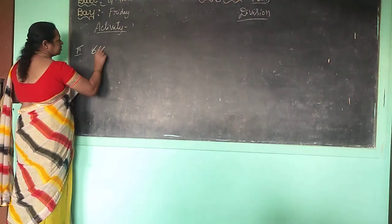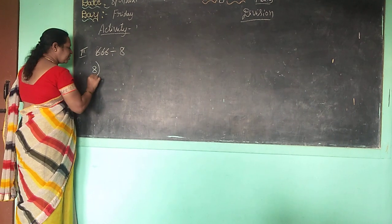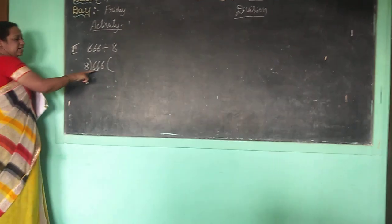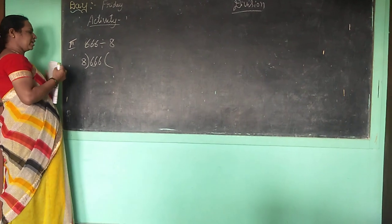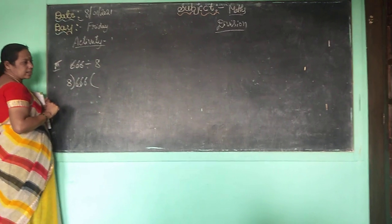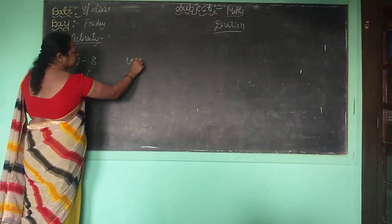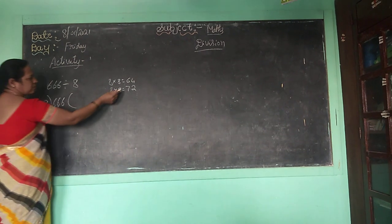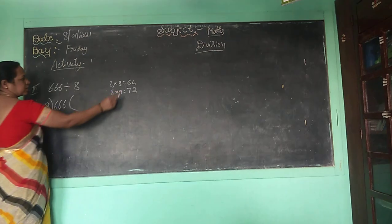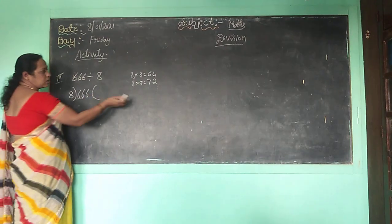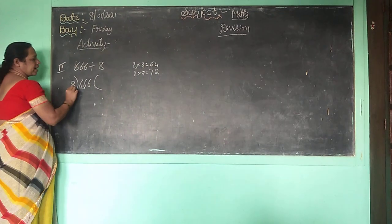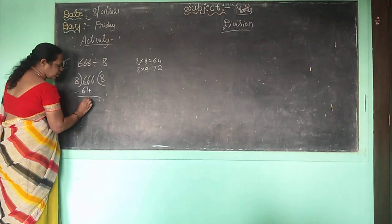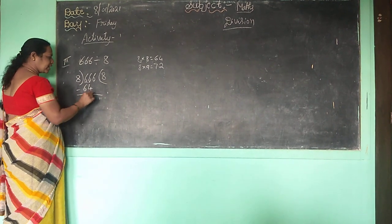Now 666 divided by 8. From 8 you divide 666. The first digit 6 is less than 8, so take 2 digits: 66. From 8 tables — 8 eights are 64, 8 nines are 72. We want 66, so we take 64 because 72 is more than 66. 8 eights are 64. Minus from 66: 6 minus 4 is 2, 6 minus 6 is 0. Take 6 down — now we have 26.